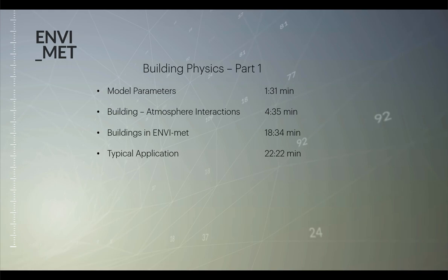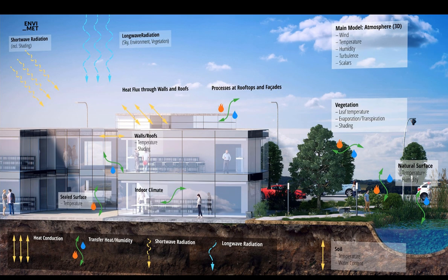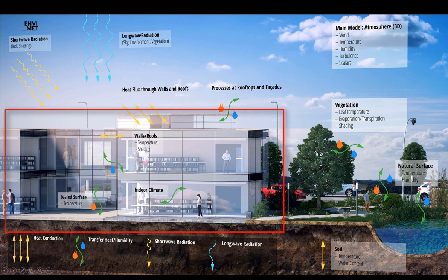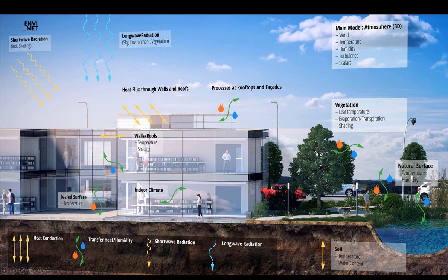Let's start with the first topic: model parameters. As many of you know, this is a quite familiar picture. The EnviMET model is a fully 3D atmosphere model where lots of scalars, vectors, etc. are being calculated. Today's focus is the building, and as you can see in this schematic, most of the arrows are connected with the buildings, because buildings play a huge and important role in the urban microclimate. Heat conduction transfers need to be modeled accurately in order to simulate not only the building physics, but also the atmosphere accurately.